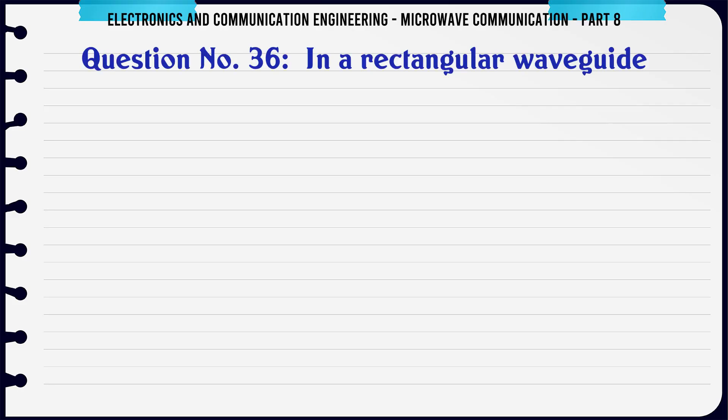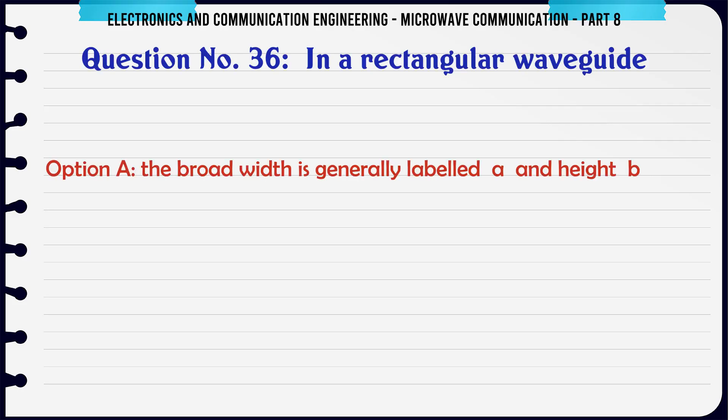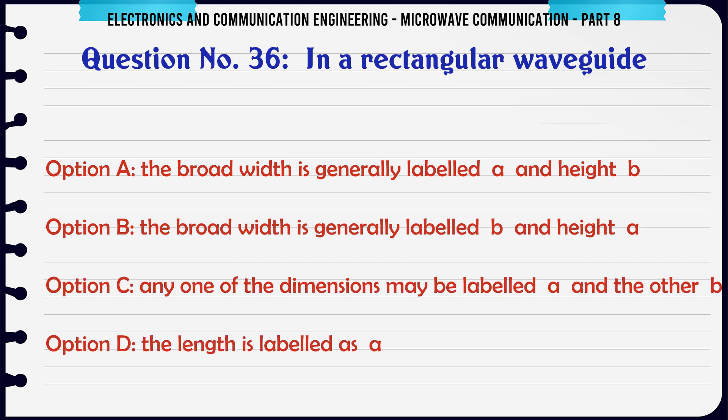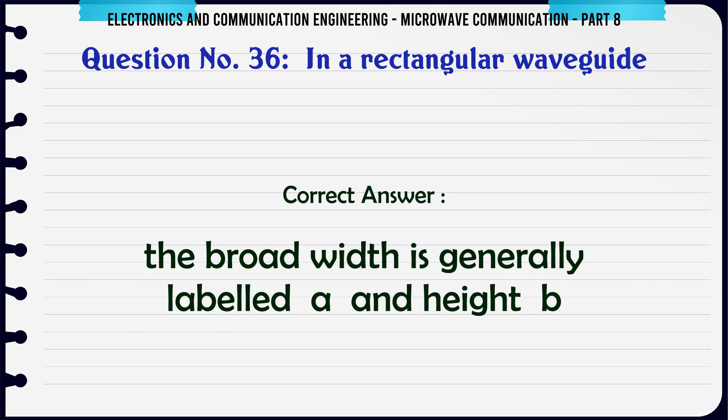In a rectangular waveguide — A. The broad width is generally labeled a and height b, B. The broad width is generally labeled b and height a, C. Any one of the dimensions may be labeled a and the other b, D. The length is labeled as a. The correct answer is: the broad width is generally labeled a and height b.